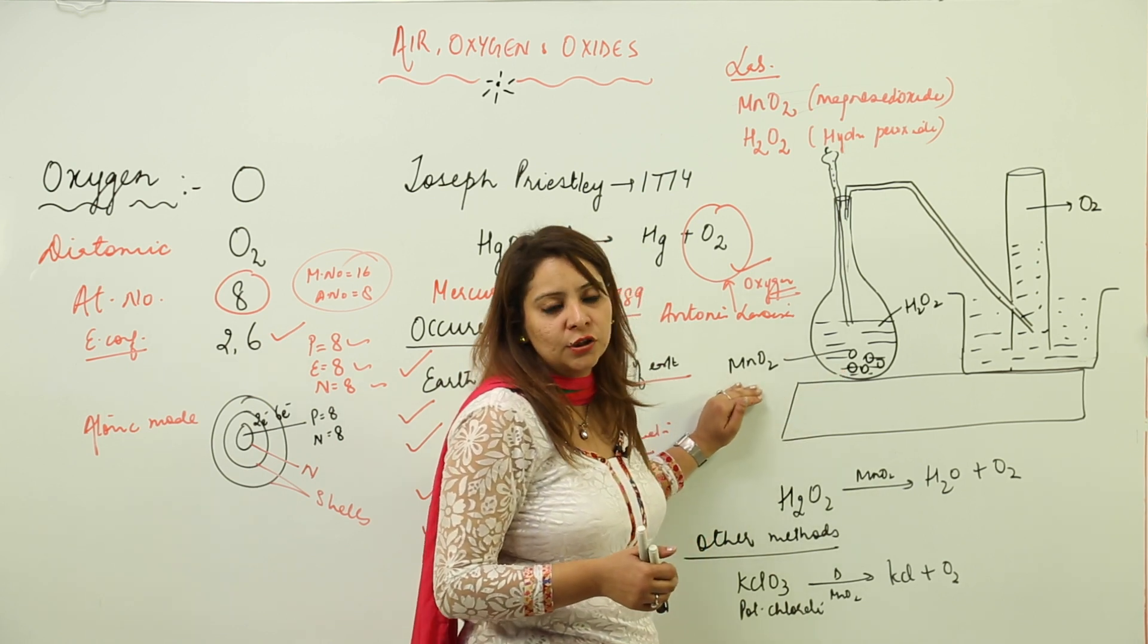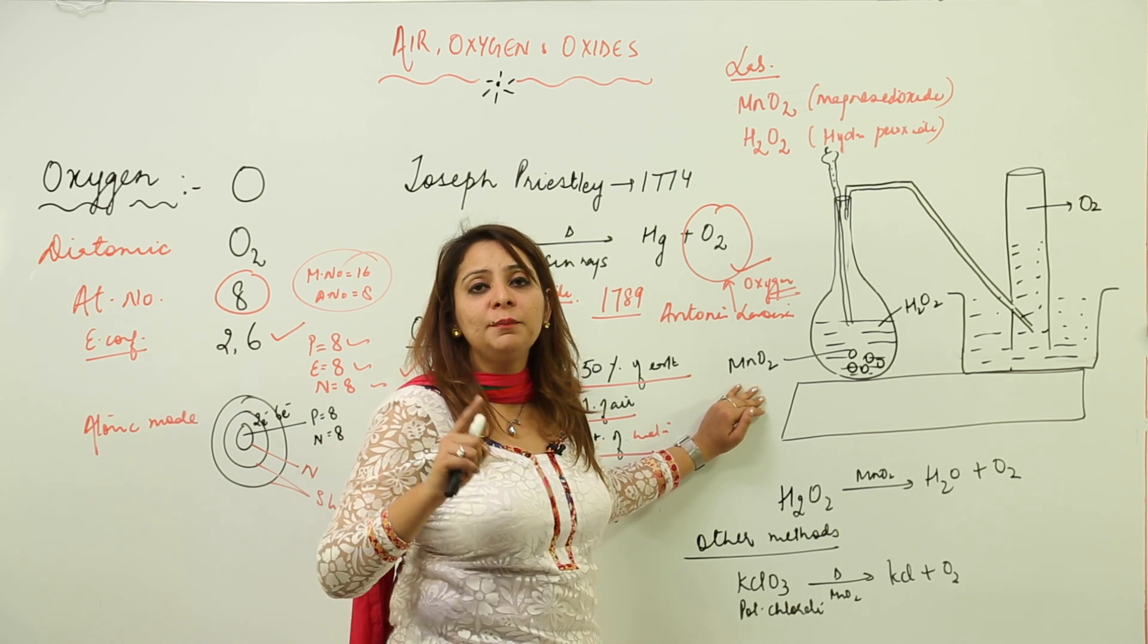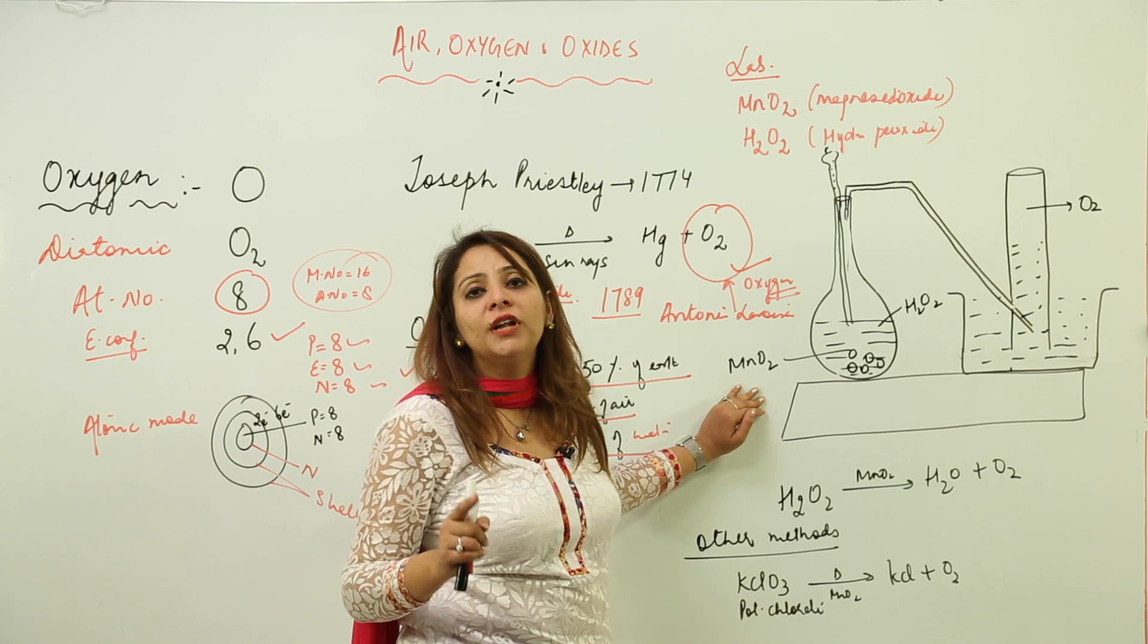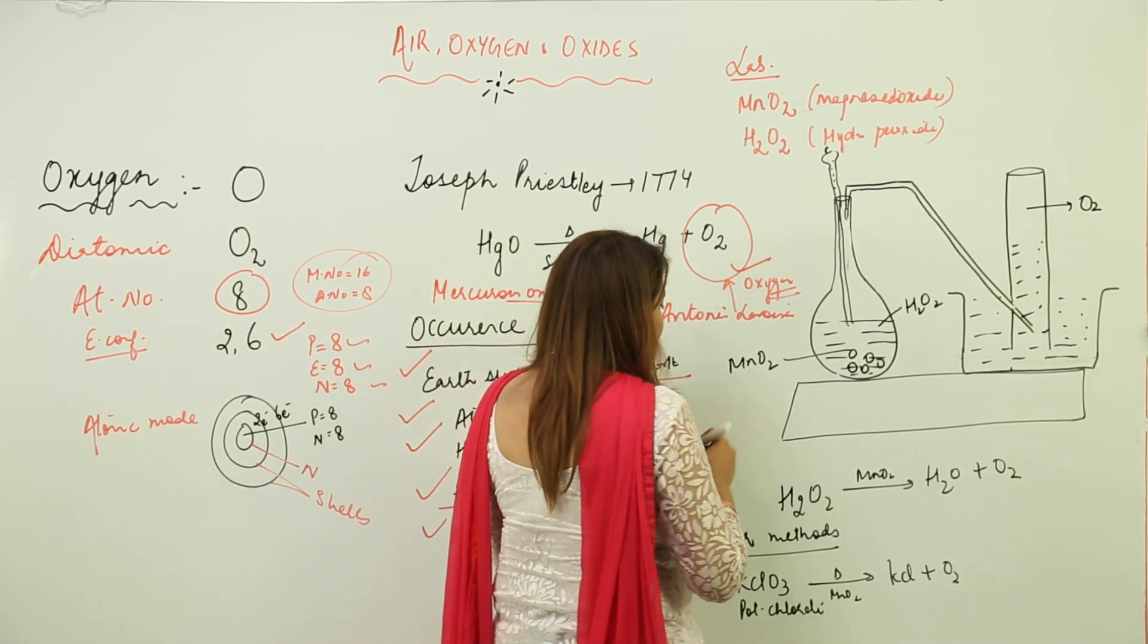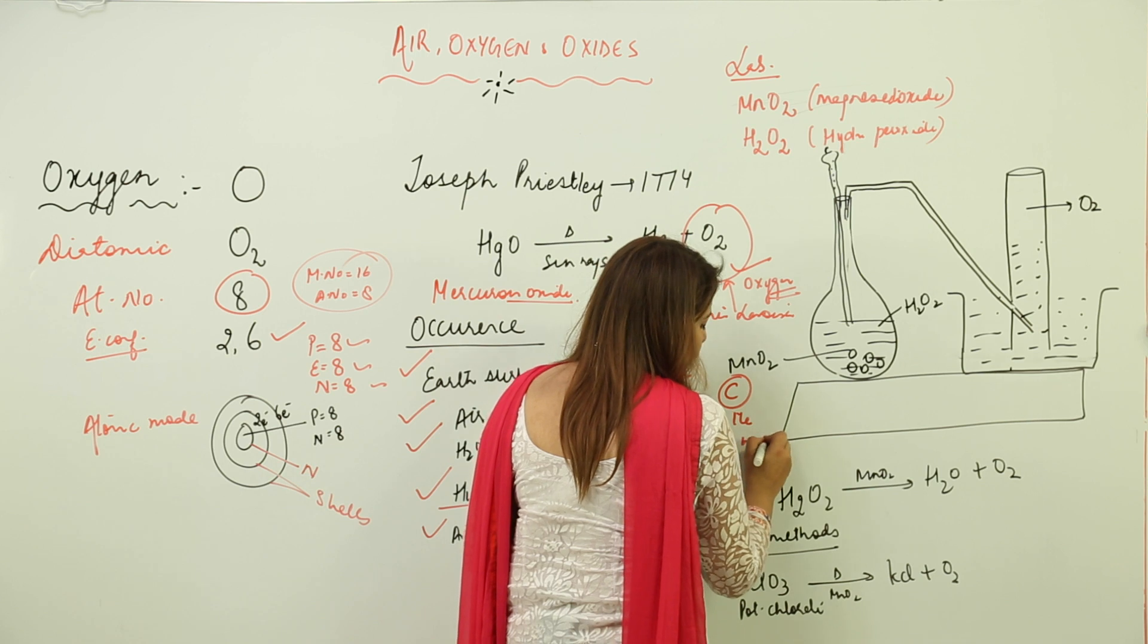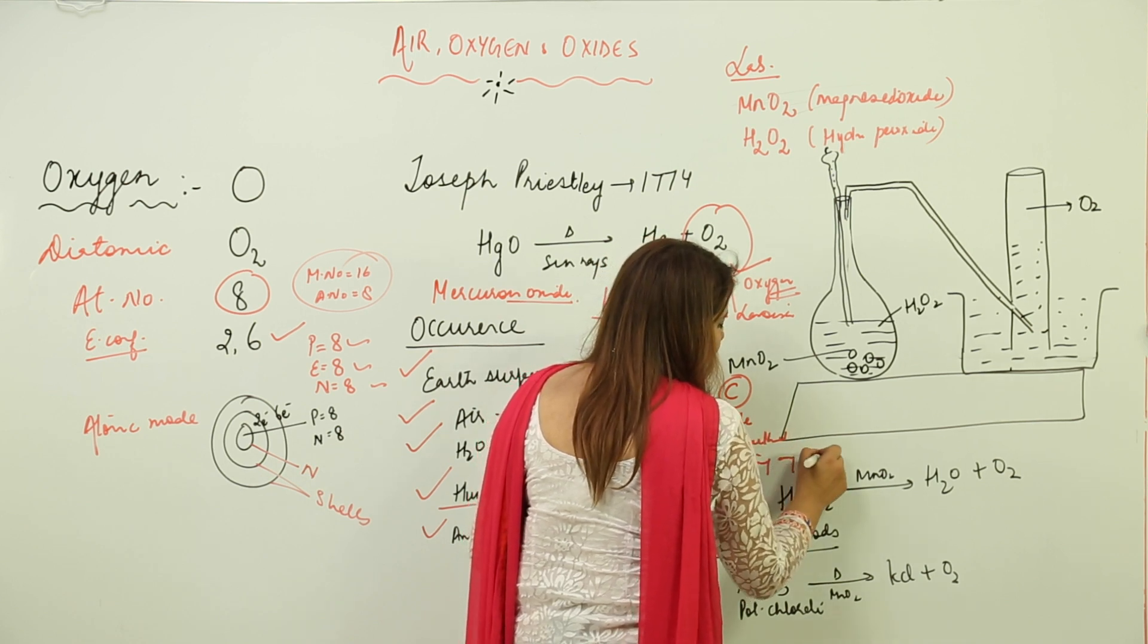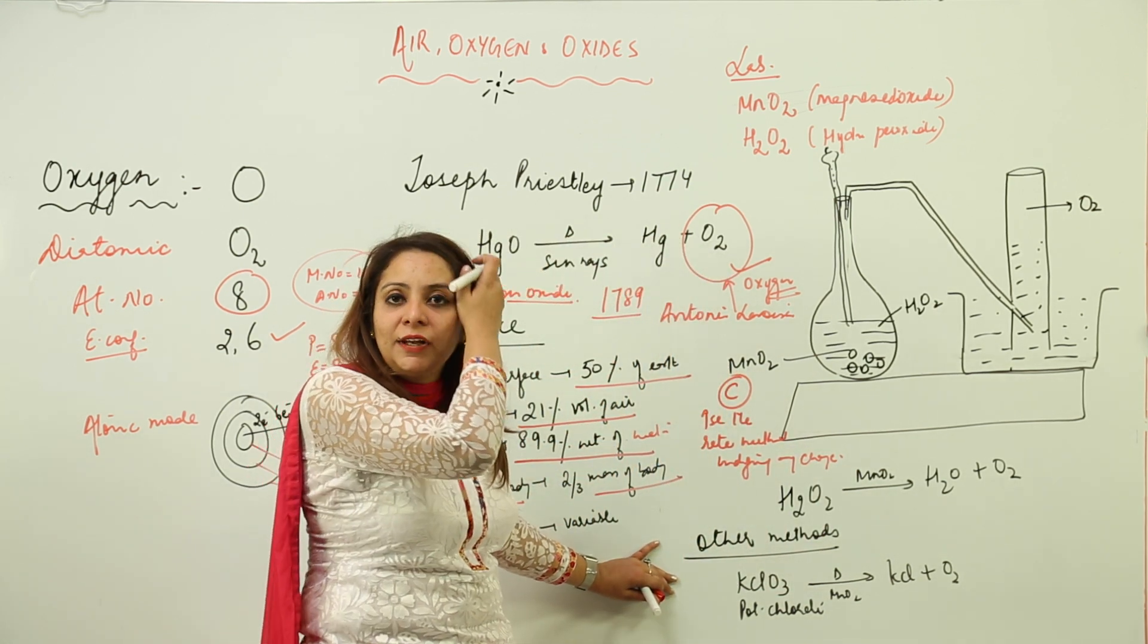Here, MnO2 acts as a catalyst. What is a catalyst? A catalyst is that which just makes the reaction happen or just increases the rate of reaction without undergoing any change in itself. So MnO2 will act as a catalyst and will help in the decomposition of H2O2.